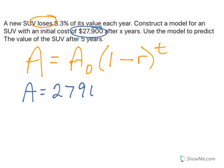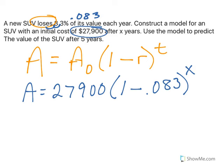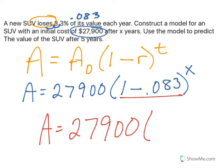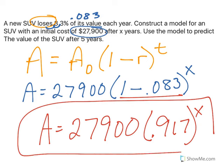That goes in A₀. 1 minus 8.3% - if we move the decimal two spots, we're at 0.083. We're going to subtract 0.083, and we're talking about X years for our model. When I subtract inside, I get a model of A equals 27,900 times 0.917 to the X. Here is the model.